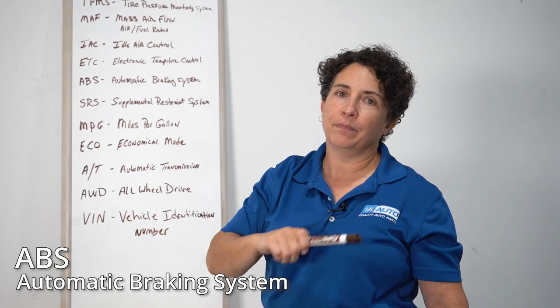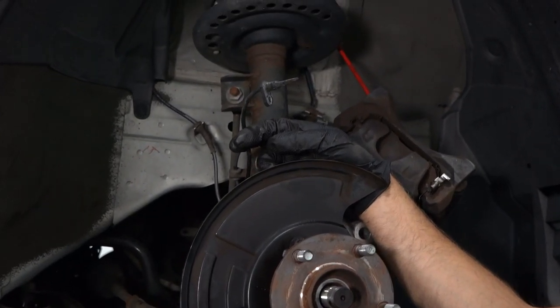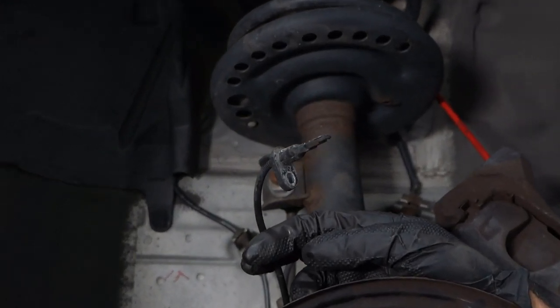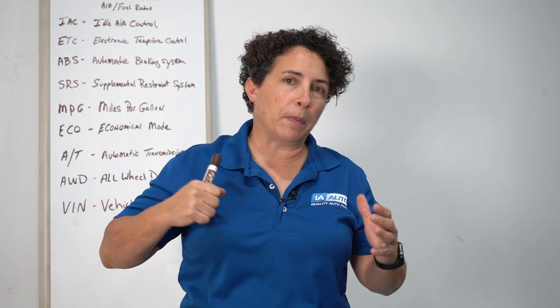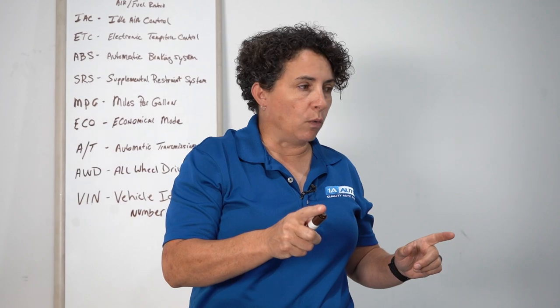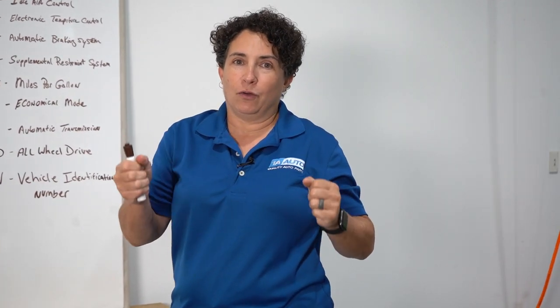ABS — automatic braking system. Everybody has one now. It's come a long way. When it first came out it wasn't the greatest device, but now they've mastered it. What it does is equalize the pressure to each wheel during a panic stop, or if you're sliding and apply the brakes. If you drive where there's ice and snow and the car starts to skid, it'll actually lock one wheel up, release another, and lock this one up — so your car stays in a straight line whether you're panicking or not.